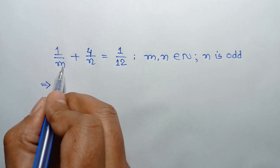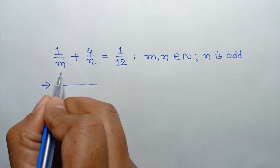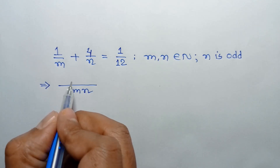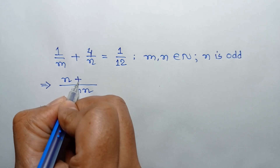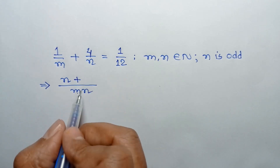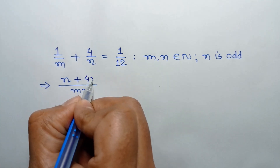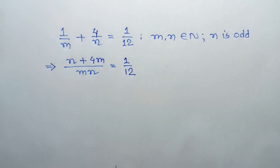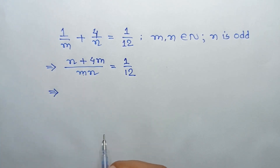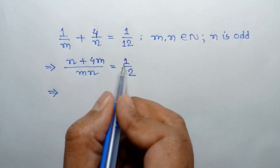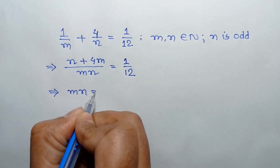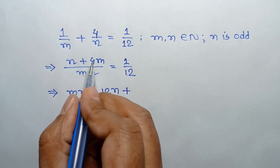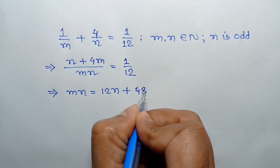Since the LCM of m and n is mn, we can write the left side with denominator mn: mn divided by m is n, so n times 1 is n, plus mn divided by n is m, and m times 4 is 4m, all over mn, equal to 1 over 12. Applying cross multiplication, mn equals 12n plus 48m.